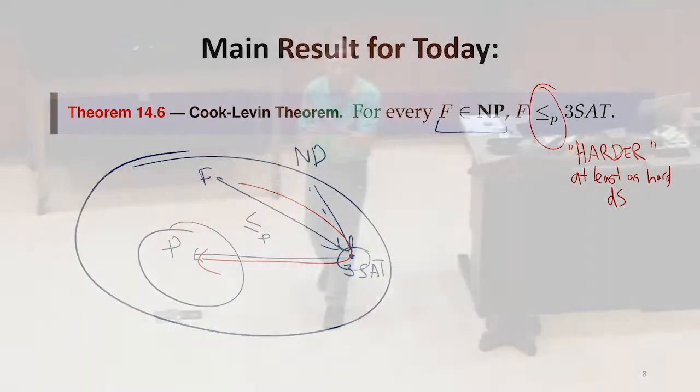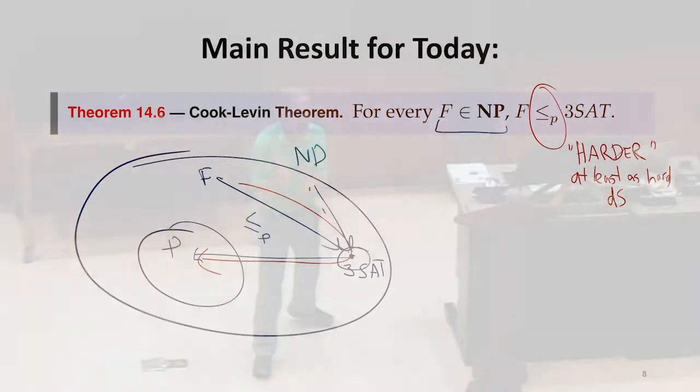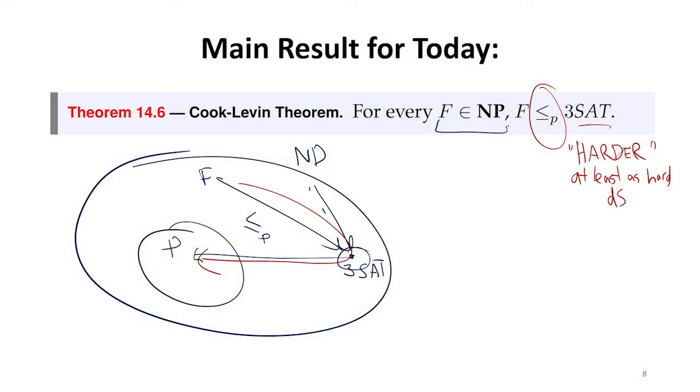I don't know if you learned about the alligator mouth wants to eat the bigger number when you went to school. I learned about that. Here the alligator mouth wants to eat the harder problem. So this means 3SAT is at least as hard as every problem within NP, where we're talking about polynomial time reductions, right? So at least as hard as modulo polynomial work. If it could be reduced to a polynomial time problem, so could every other problem within class NP.